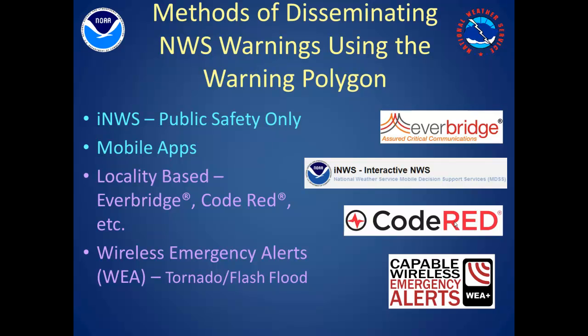Many of these services, including INWS, mobile apps on your smartphone or tablet, or locality-operated systems such as Code Red and Everbridge, have the ability to utilize National Weather Service warning polygons to distribute tornado, severe thunderstorm, and flash flood warnings in a timely fashion. In addition, a relatively new service called Wireless Emergency Alerts, or WEA, has the capability to warn you where you are.